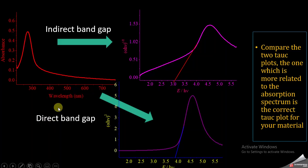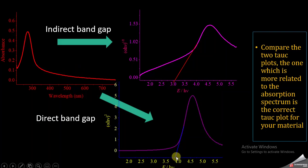Similarly, to find the direct band gap you plot alpha·hν whole squared versus energy in electron volts and you get this kind of plot for this absorption spectra. Again, to find the band gap you draw a straight line to the x-axis — at this point it is around 3.9 electron volts, which will be the band gap of your material.